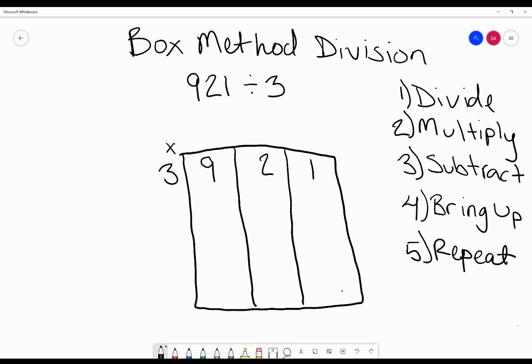We have 9 divided by 3 is 3. Then we multiply 3 times 3 which gives us 9.